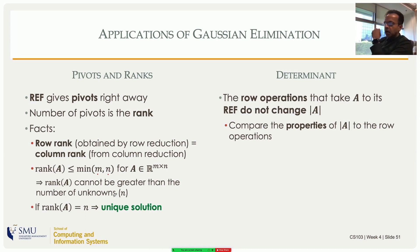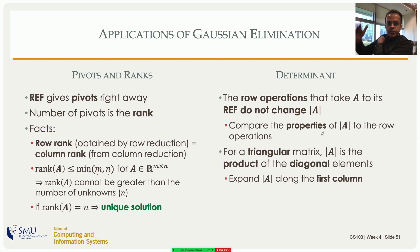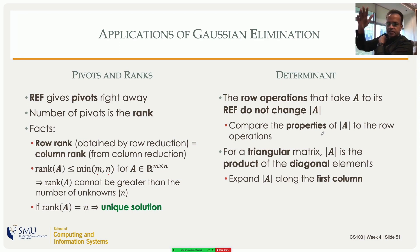To get the determinant, you can use the output of Gaussian elimination — the REF. The third row operation (adding a multiple of one row to another) does not change the determinant. But if you swap two rows, you introduce a negative sign. For a square matrix, REF gives an upper triangular matrix, and if it is full rank — pivots in every column and every row — the determinant is the product of the diagonal elements.